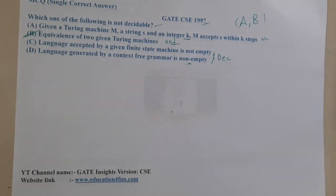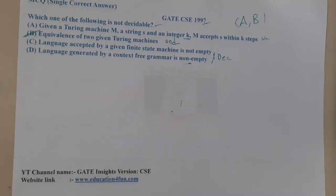I hope everyone got a clear idea on this. C and D are compulsorily decidable. I hope everyone got a clear idea with respect to this question. In the next lecture, let's continue with the next question.